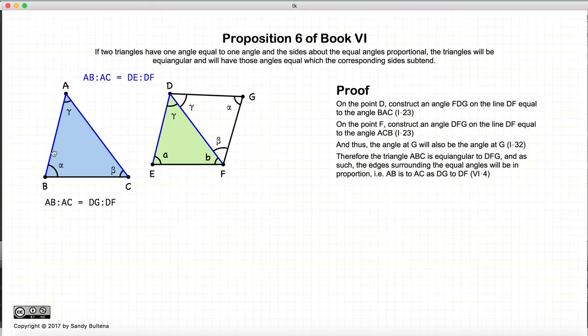AB to AC, DG to DF. AB to AC is equal to DE to DF.